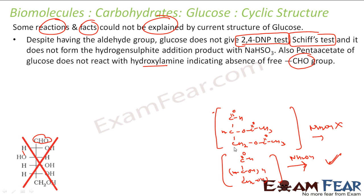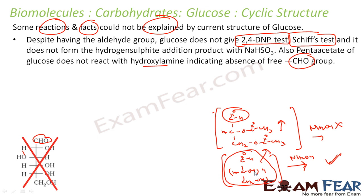That means the straight-chain structure of glucose is not correct — there has to be something else. This clearly tells us there must be a cyclic structure and the aldehyde is not free. The structure changes based on the medium: if it is aqueous medium, the structure changes; if it is dry medium, the structure is different.